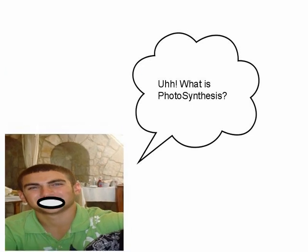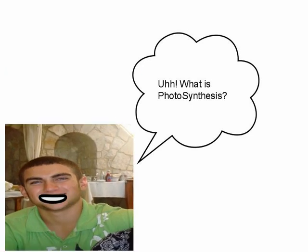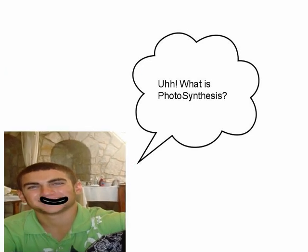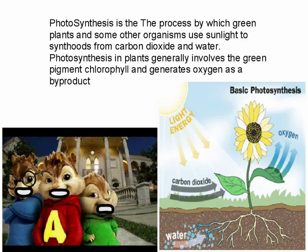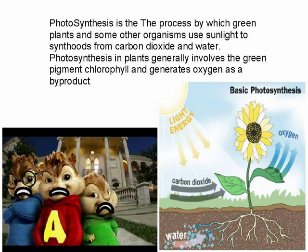What is photosynthesis? Photosynthesis is the process by which green plants and some other organisms use sunlight to synthesize food from carbon dioxide and water. Photosynthesis in plants generally involves the green pigment chlorophyll that generates oxygen as a byproduct.